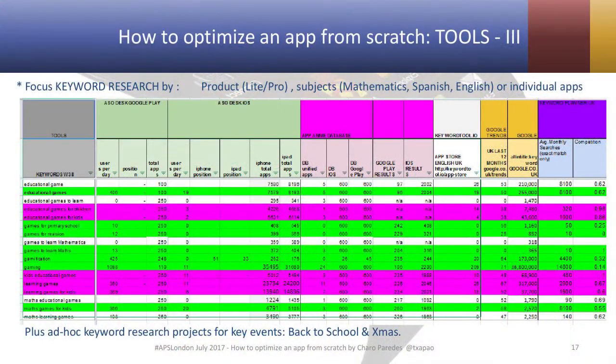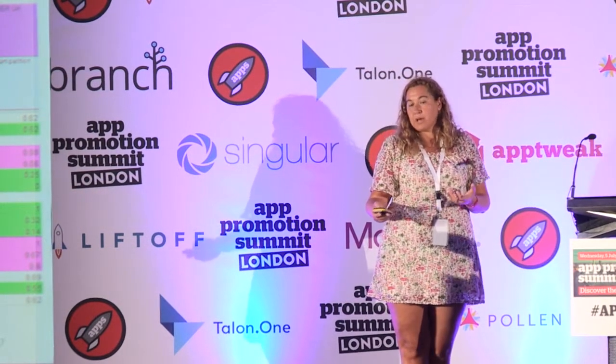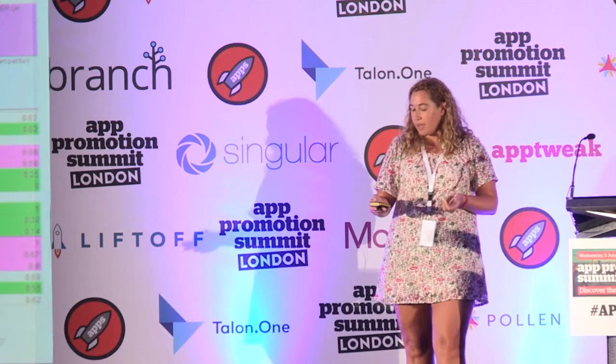There is something else you can do: focus your research on a specific subject, like just mathematics or a specific individual game. You can also do keyword research for important campaigns that you are running on paid performance, like back-to-school or Christmas, which make a lot of sense for this type of educational app.